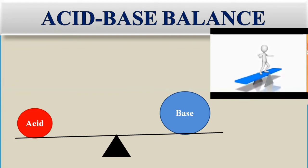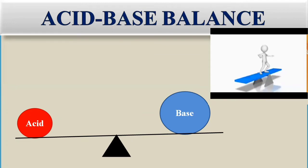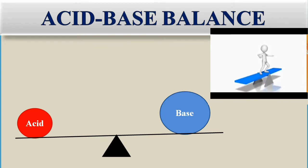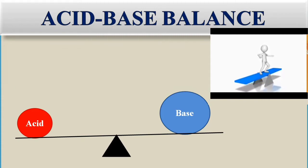Acid-base balance is required. If there is any minute disturbance or deviation — any imbalance in the acid-base level — it may affect the organs and systems of the human body. Let's see first what acids and bases are, and why their levels must be maintained to support the physiological activities of the human body.